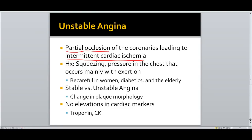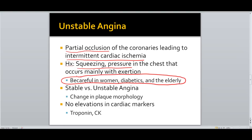Unstable angina is the partial occlusion of the coronary arteries leading to intermittent cardiac ischemia. Patients usually describe a squeezing or pressure-like sensation in the chest occurring mainly with exertion. In stable angina the pain only occurs with exertion and is relieved by rest; in unstable angina the pain occurs with exertion but rest no longer relieves it. Be careful with this history in women, diabetics, and the elderly — they tend not to fit the typical chest pain model and can present atypically with burping, upper abdominal pain, or shoulder pain.